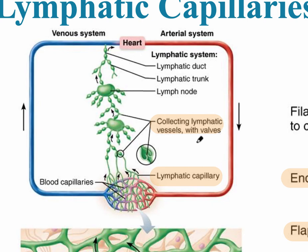All along the trip back to the heart, there are lymph nodes — and we have thousands of lymph nodes in our body. Lymph nodes are the small organs of the lymphatic system. They are small regions where immune cells hang out to attack bacteria and microbes.